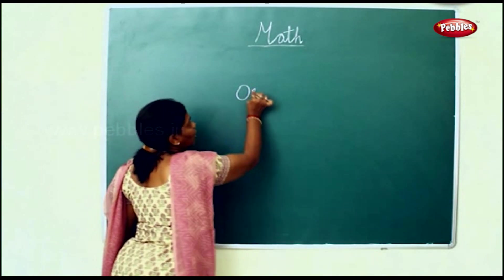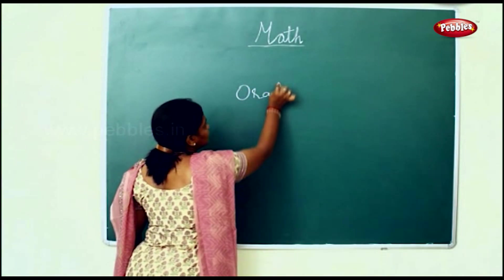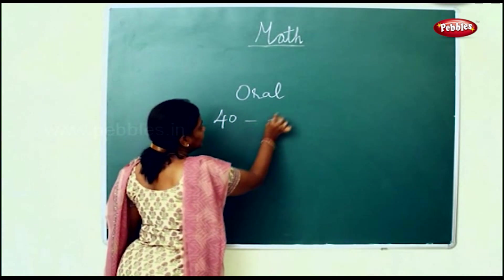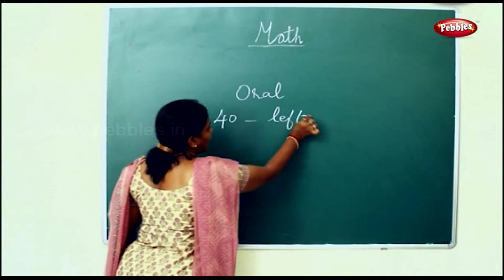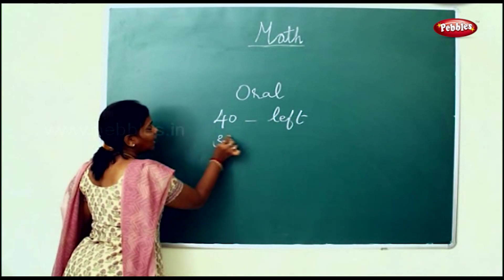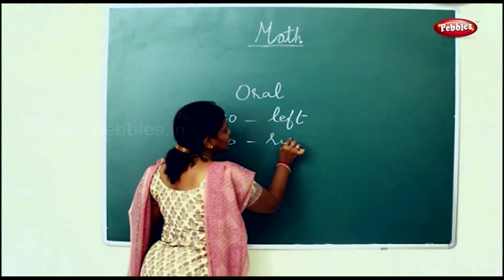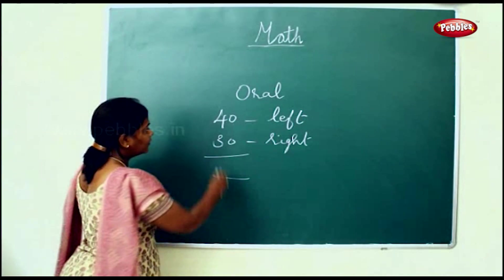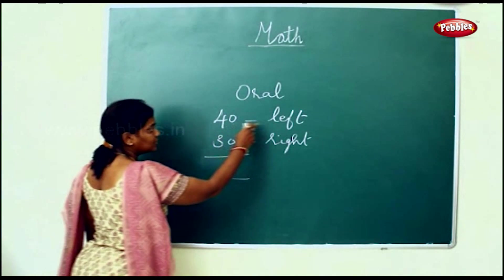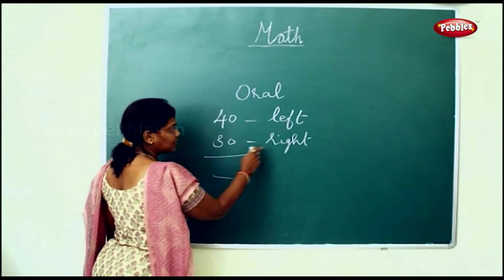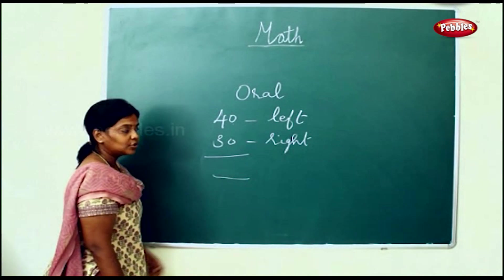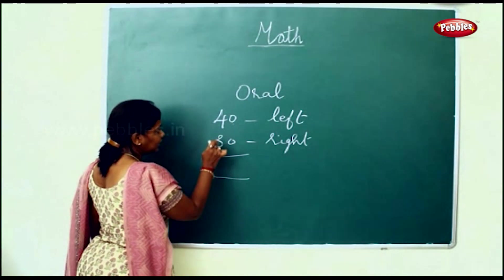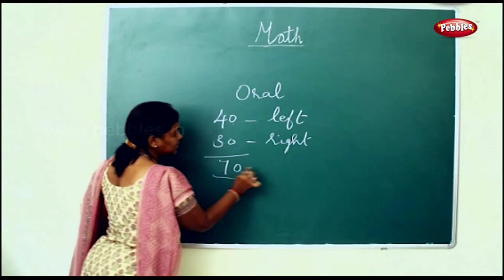Today we'll see some oral sums. In a street there are 40 houses on the left side and 30 houses on the right side. We have to find the total number of houses in the street. So 40 add 30 will be 70 houses.